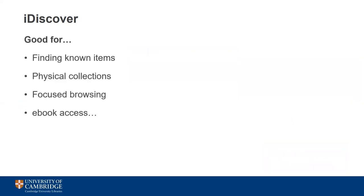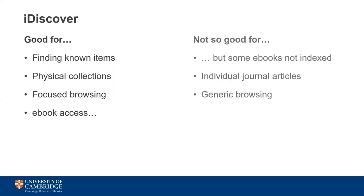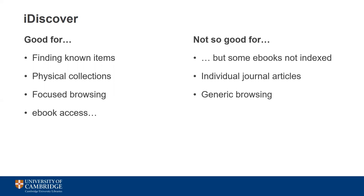In summary, iDiscover is very good at finding known items — for example a specific book on a reading list or the works of a particular author — and has comprehensive coverage of physical items held in most libraries. You can browse by subject, author, or publication year quite easily, but remember that covering so much means you might get a large list of results. Be aware that sometimes individual ebook titles aren't indexed, so always check with library staff if you can't find something. Similarly, typing in a journal article name won't always take you straight to where you want to go — it's best to search for the journal title and find the article using the year and volume number.